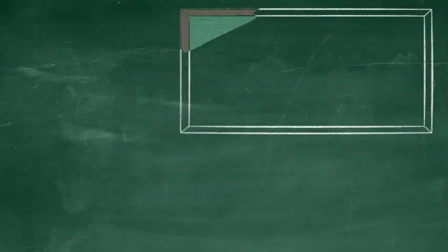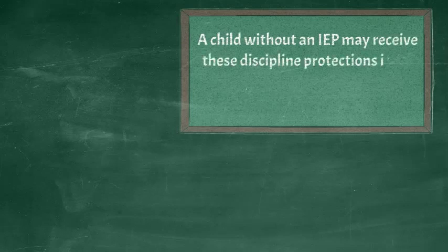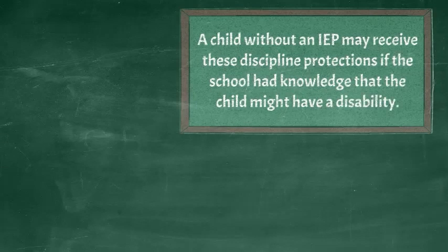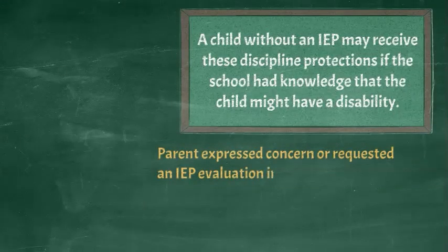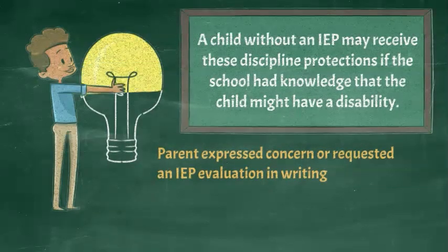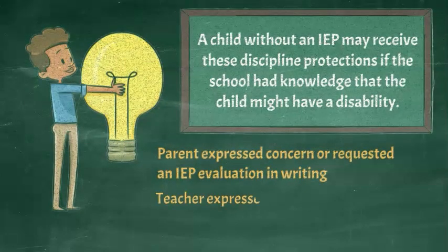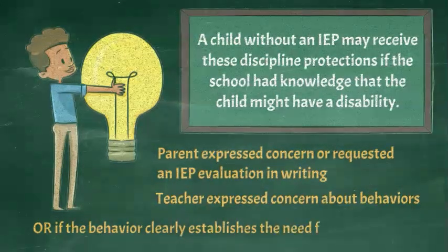Even if a student does not yet have an IEP, if a school has knowledge that a child may have a disability, the child receives the same discipline protections as if an IEP is already in place. The school has knowledge when a parent expressed concern in writing that their child may need special education, a parent requested an evaluation for an IEP in writing, a teacher or other personnel expressed specific concerns about a pattern of behavior by the child to supervisory personnel, or the behavior and performance of the child clearly establishes the need for evaluation for special education services.